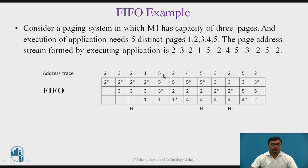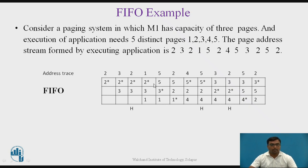Whenever the application needs to access the next block — block five — it first searches whether five is present in cache memory. It is not, and there are no empty blocks. So it overwrites an existing cache line based on the FIFO method: the block loaded earliest is replaced. Block two was loaded earliest, so five replaces block two. Now five is loaded into cache, and block three becomes the first-in block and is marked with a star.